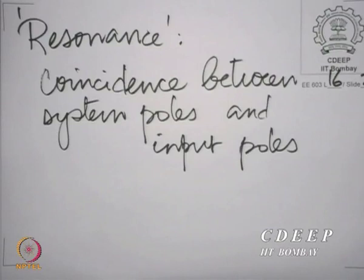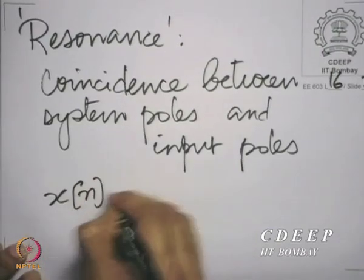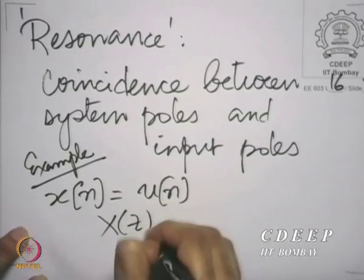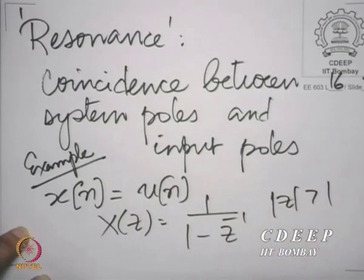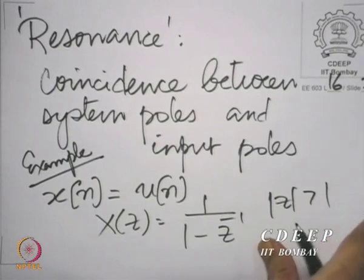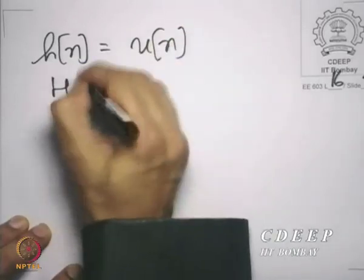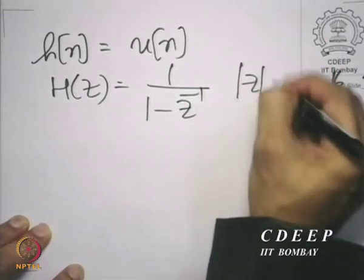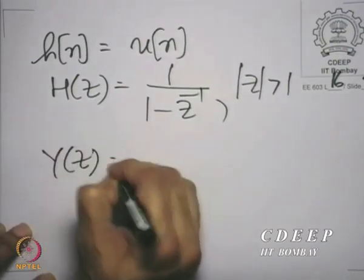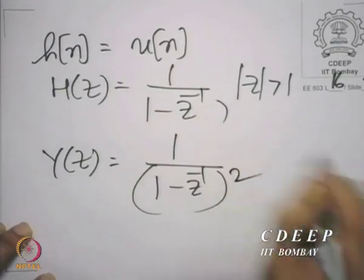For example, we could take x[n] equal to u[n]. The z-transform is 1/(1 - z⁻¹) with |z| > 1. Let us take h[n] to be the same sequence, whereupon H(z) is also 1/(1 - z⁻¹) with |z| > 1. Now, Y(z) of course would be 1/(1 - z⁻¹)² with |z| > 1.